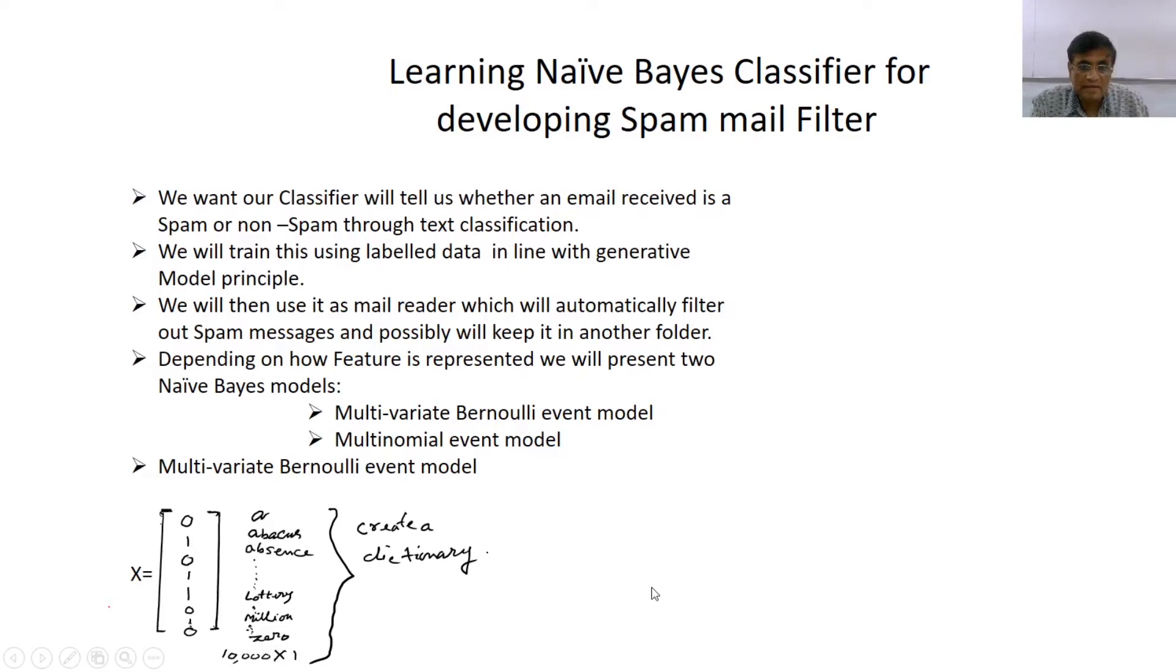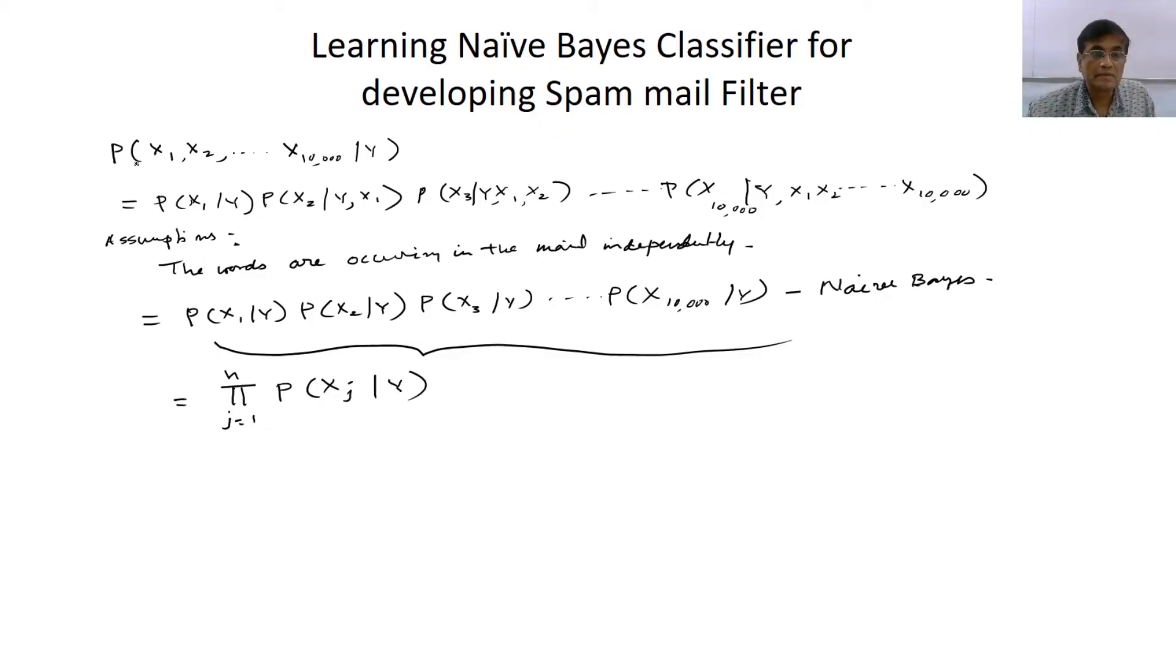And if we wanted to use a probabilistic model, simple probabilistic model, then I need how many parameters? 2 to the power 10,000 parameters to model this event which can represent 10,000 words minus 1 because 1 parameter is already there. So that many parameters will be required for modeling using probability theory. Here we are trying to tell you what is the probability that feature 1, 2, 3 up to 10,000 given a particular class spam or non-spam. If I want to calculate, this is what the formula is telling.